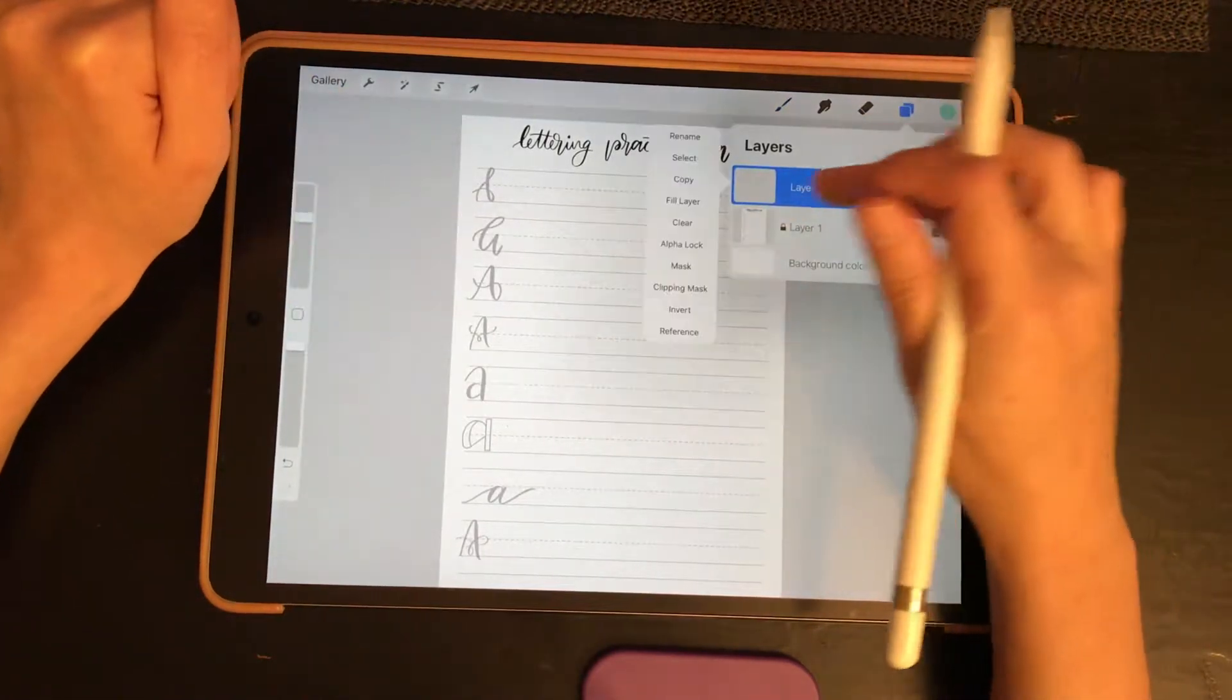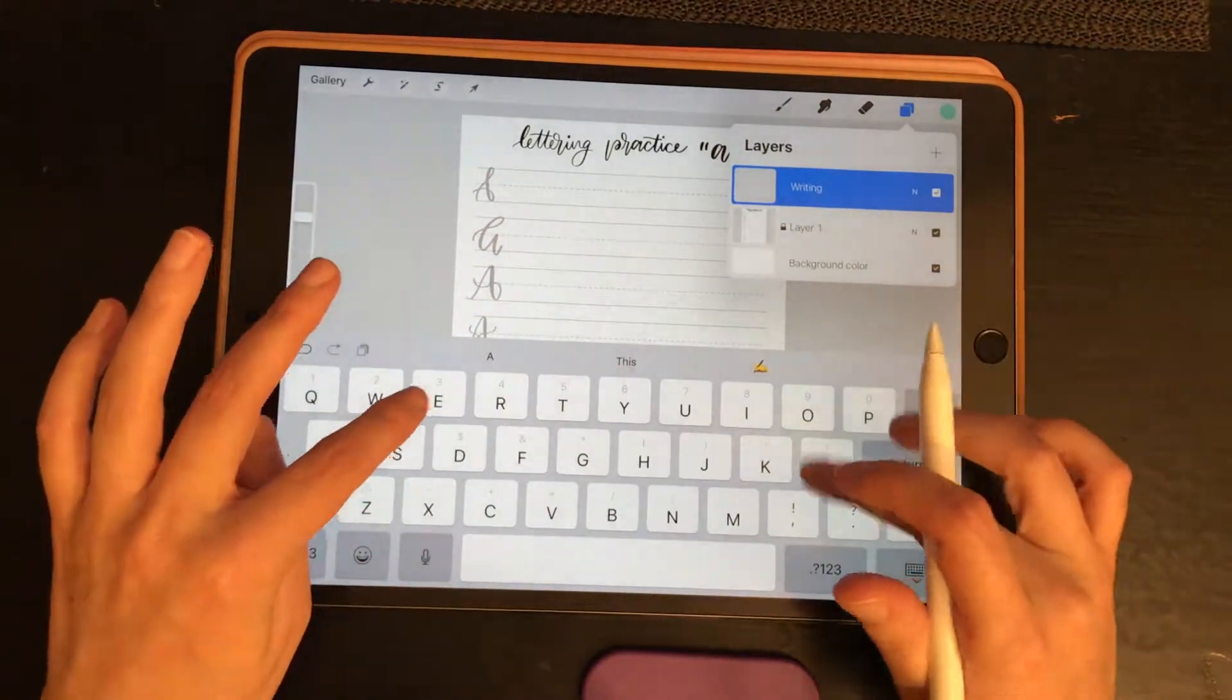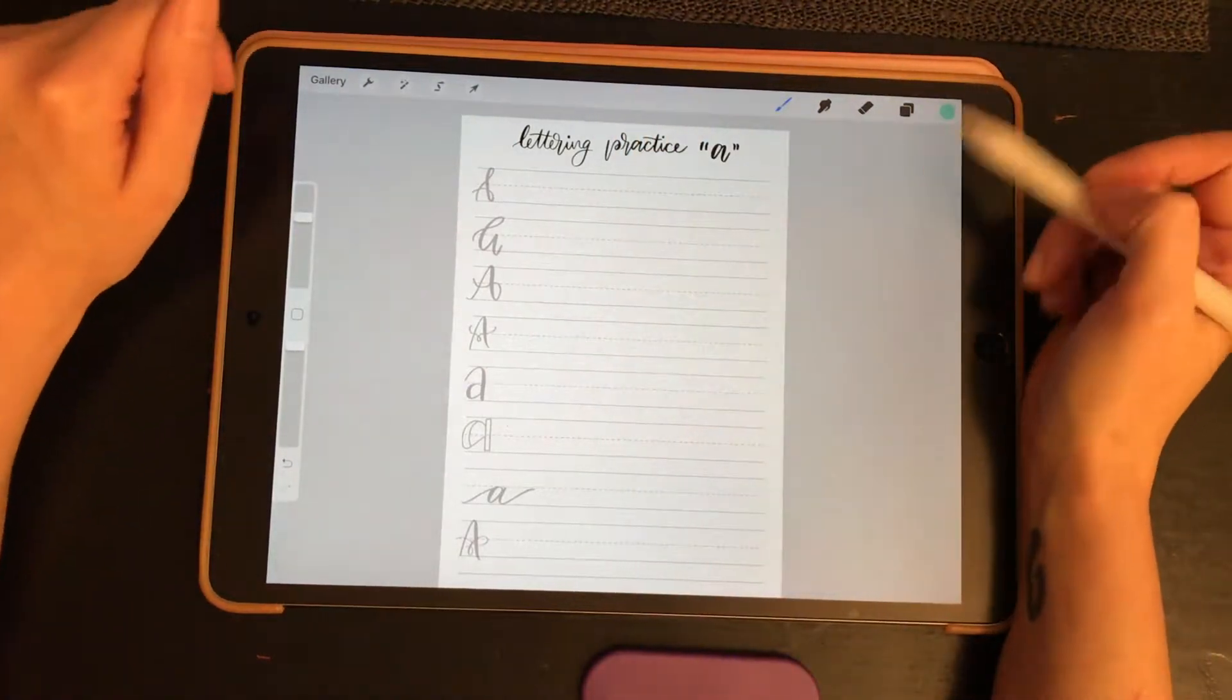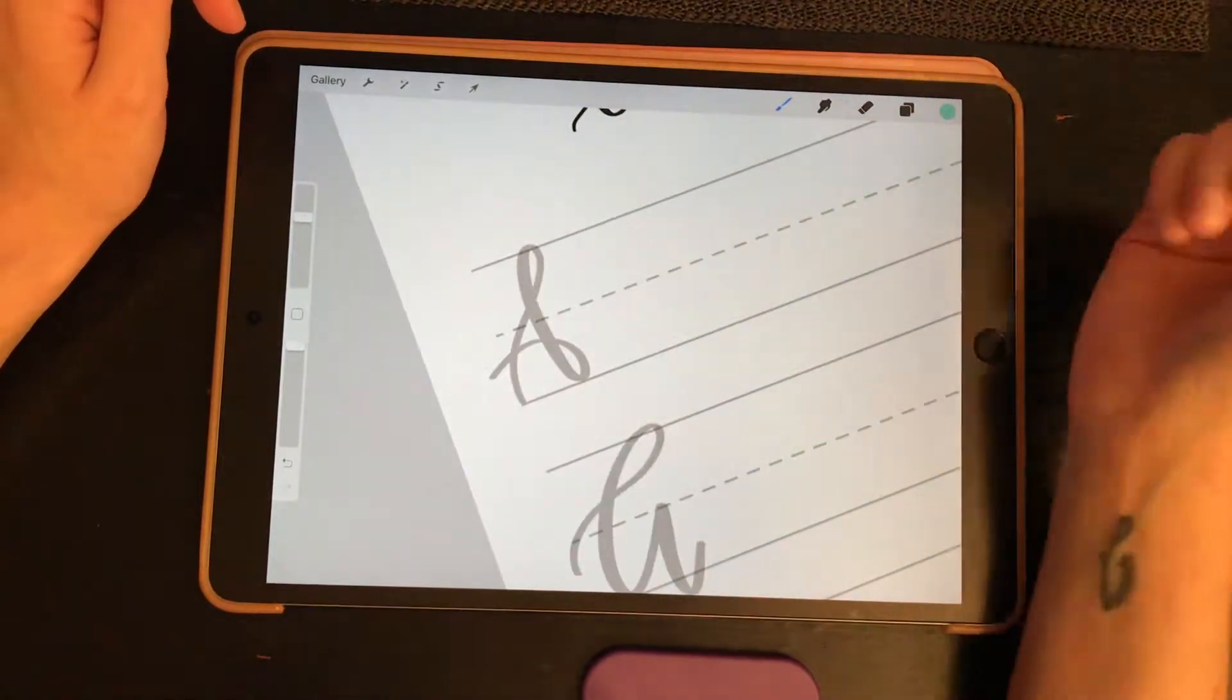And you want to make a new layer and this is going to be your writing layer. So I'm just going to name that real quick. And then I used kind of a turquoisey color just to show you guys.